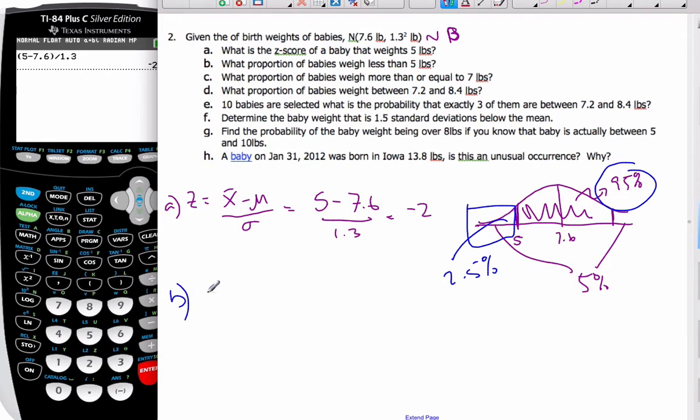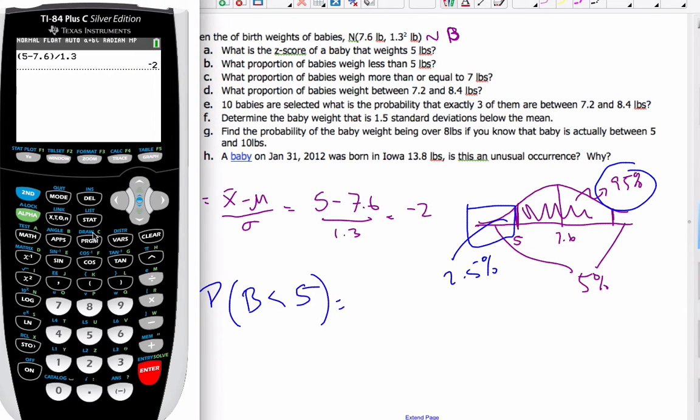If I do it by calculations, I want to find the probability that B is less than 5. I go to my calculator, to my distributions, normal CDF. My lower bit is going to be negative infinity, some big number, up to 5, where the mean is 7.6 and the standard deviation is 1.3.